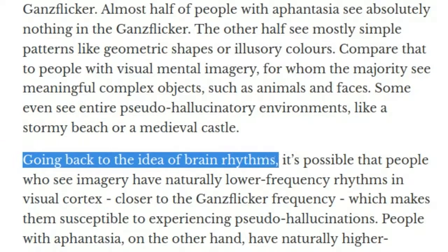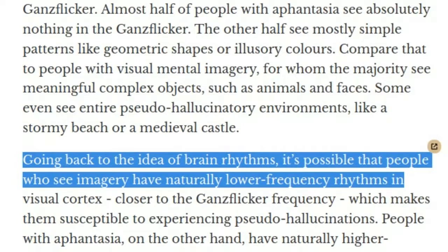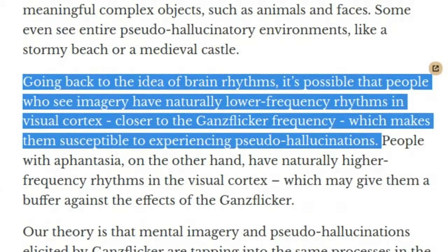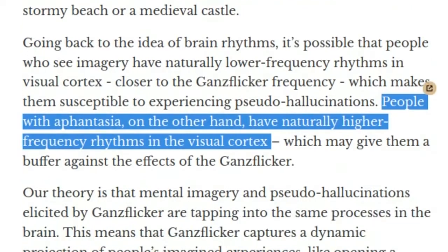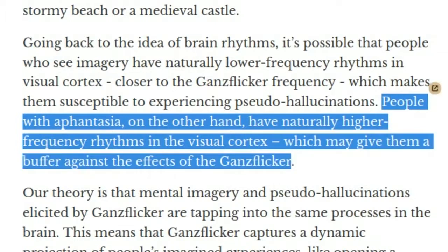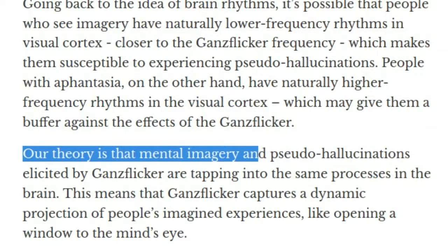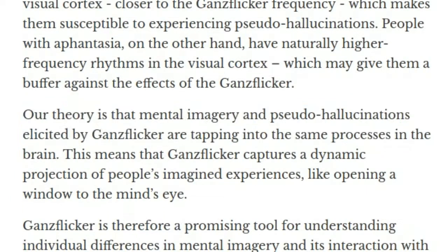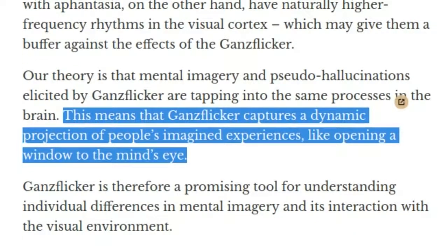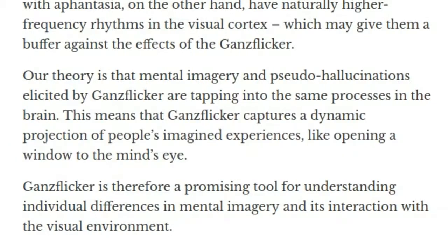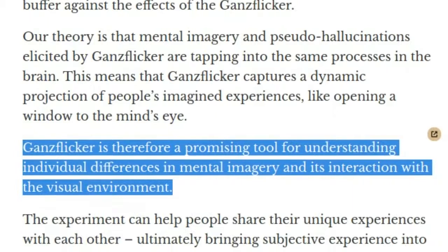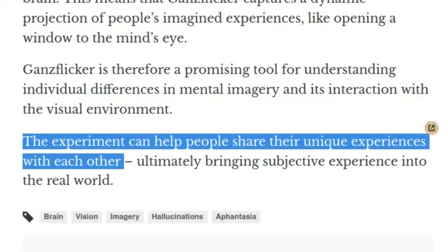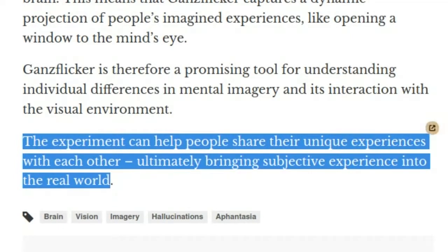Going back to the idea of brain rhythms, it's possible that people who see imagery have naturally lower frequency rhythms in the visual cortex, closer to the GANs flicker frequency, which makes them susceptible to experiencing pseudo-hallucinations. People with aphantasia, on the other hand, have naturally higher frequency rhythms in the visual cortex, which may give them a buffer against the effects of the GANs flicker. Our theory is that mental imagery and pseudo-hallucinations elicited by GANs flicker are tapping into the same processes in the brain. This means that GANs flicker captures a dynamic projection of people's imagined experiences, like opening a window to the mind's eye. GANs flicker is therefore a promising tool for understanding individual differences in mental imagery and its interaction with the visual environment. The experiment can help people share their unique experiences with each other, ultimately bringing subjective experience into the real world.